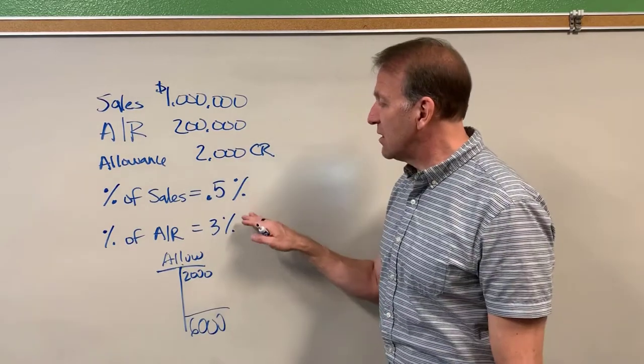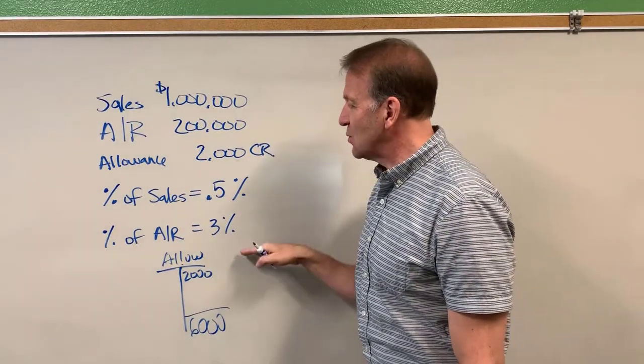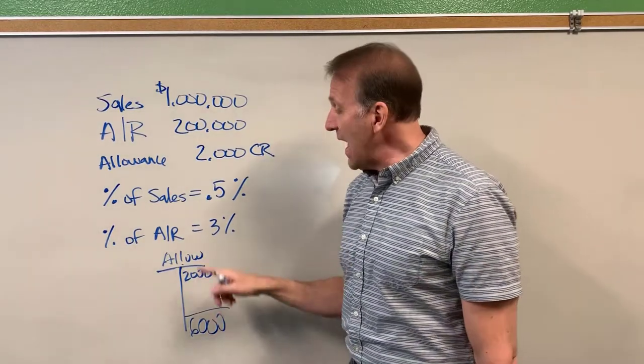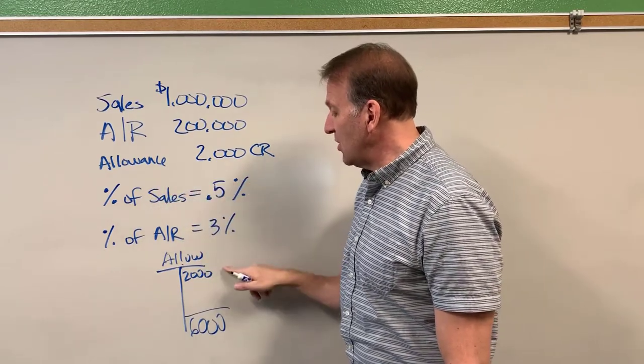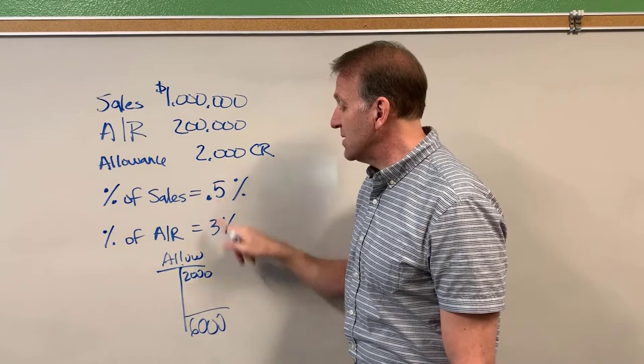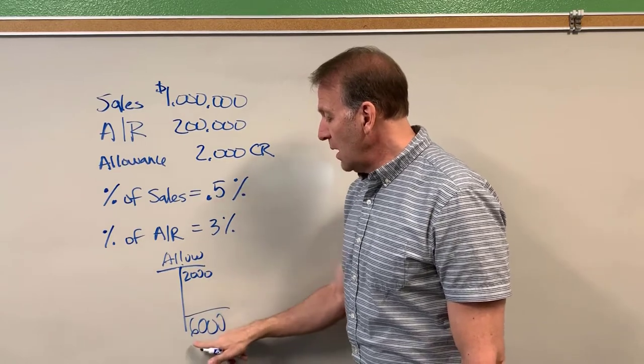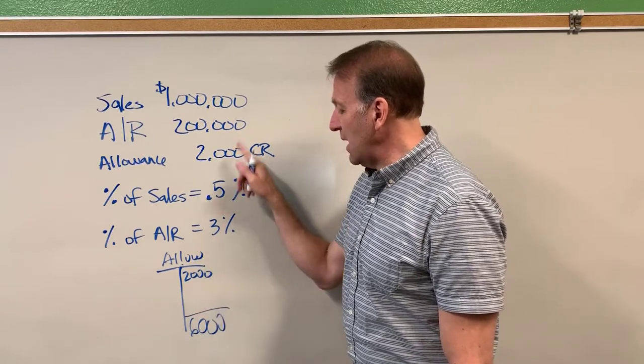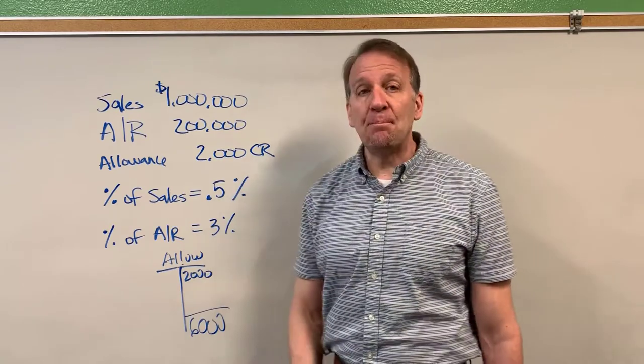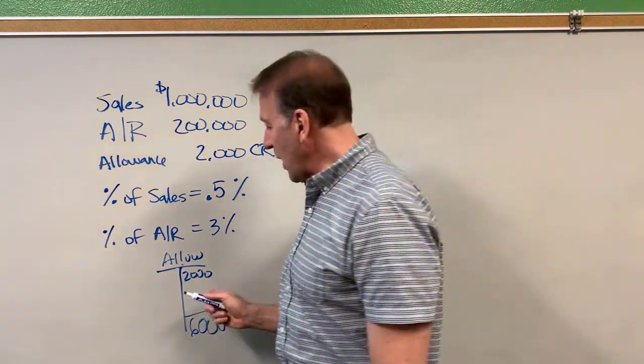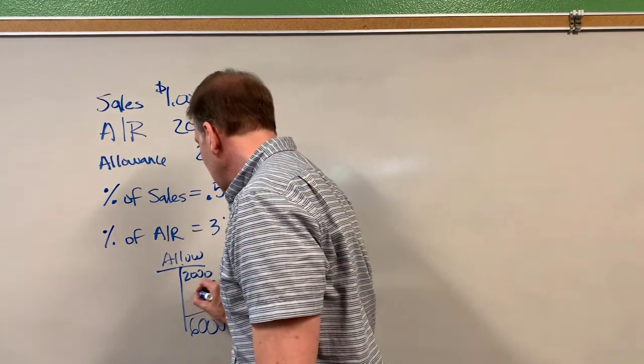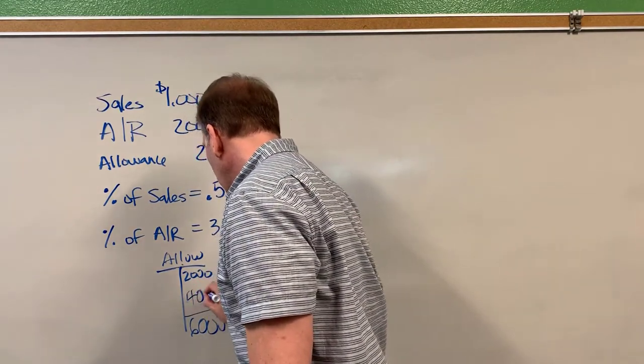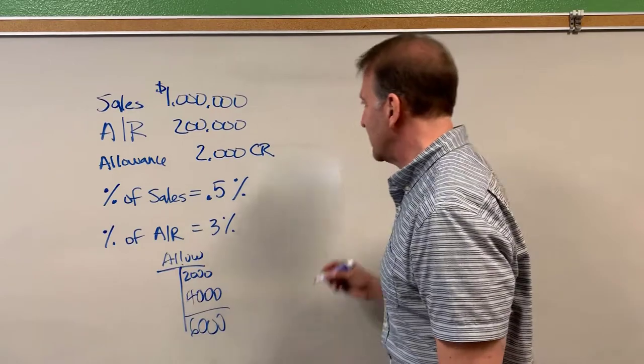We want our ending balance to be three percent of accounts receivable. And the problem stated that we already have two thousand in, so that's why I've got this two thousand right here because that was given. And now when we take three percent that's what we want our ending balance to be. So then what would our adjustment need to be? Our adjustment needs to be four thousand dollars in order to get to the six thousand.